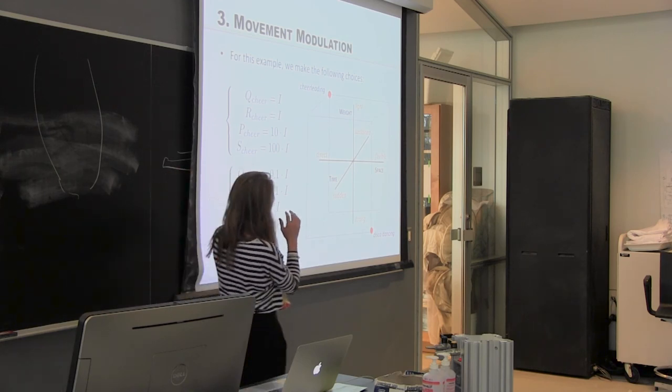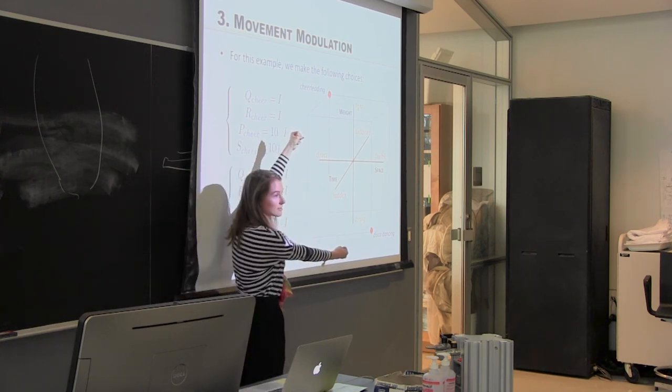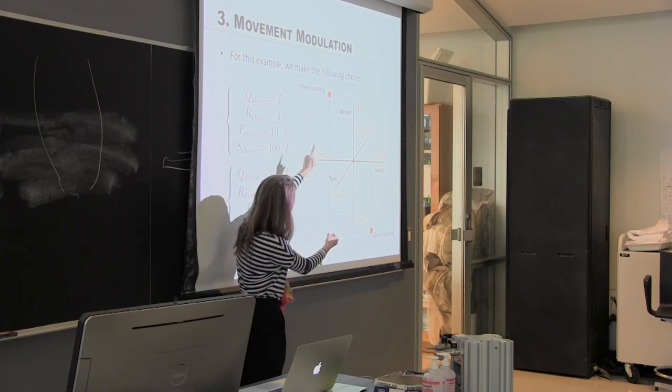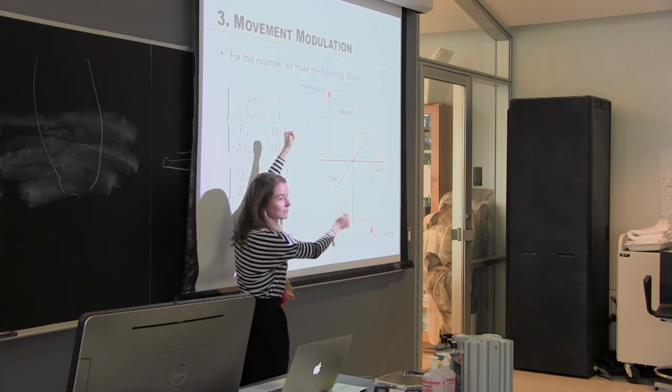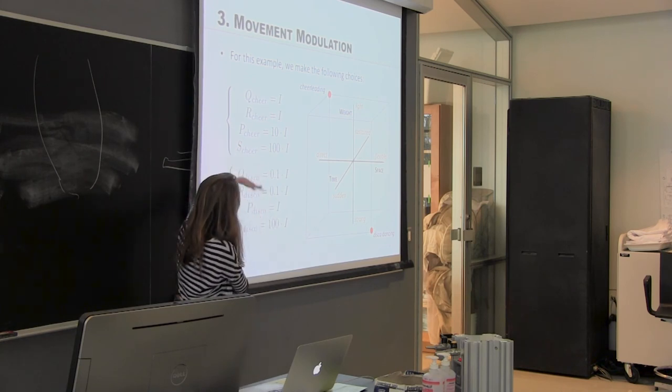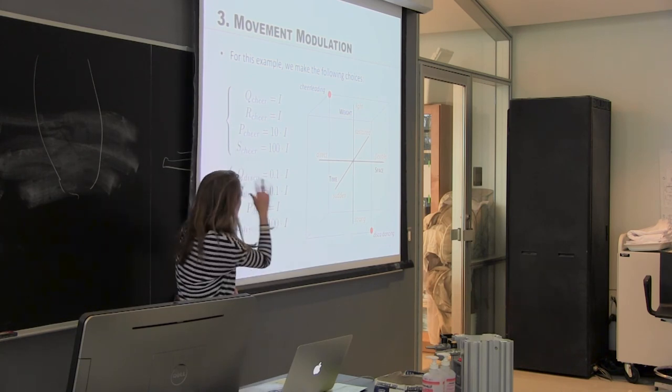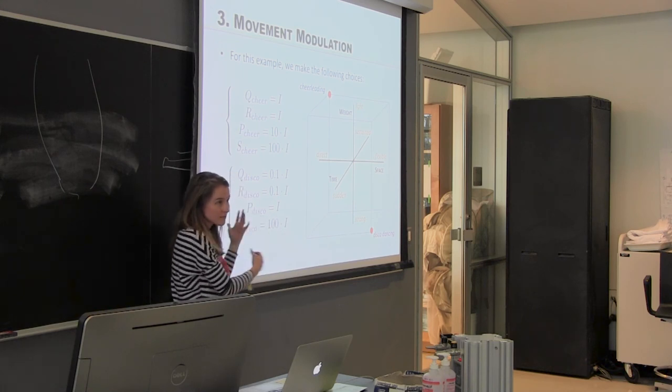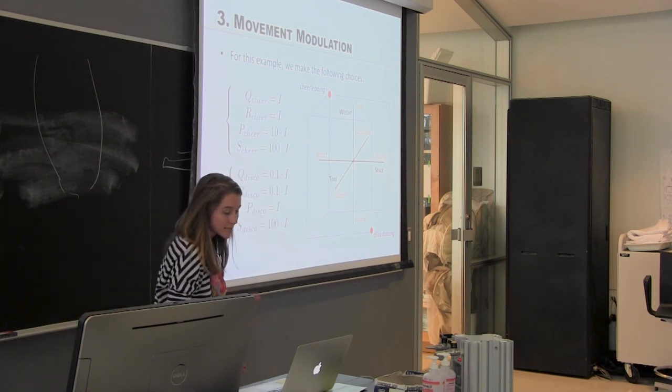So for cheerleading and disco dancing, I'm going to pick these different sets of qualities. So here I have space, weight, and time. I'm going to graph them showing you that I'm making different choices for each, which just means that these weights are either relatively large or relatively small. And in this cost function, I'm penalizing different things for the different styles of motion.